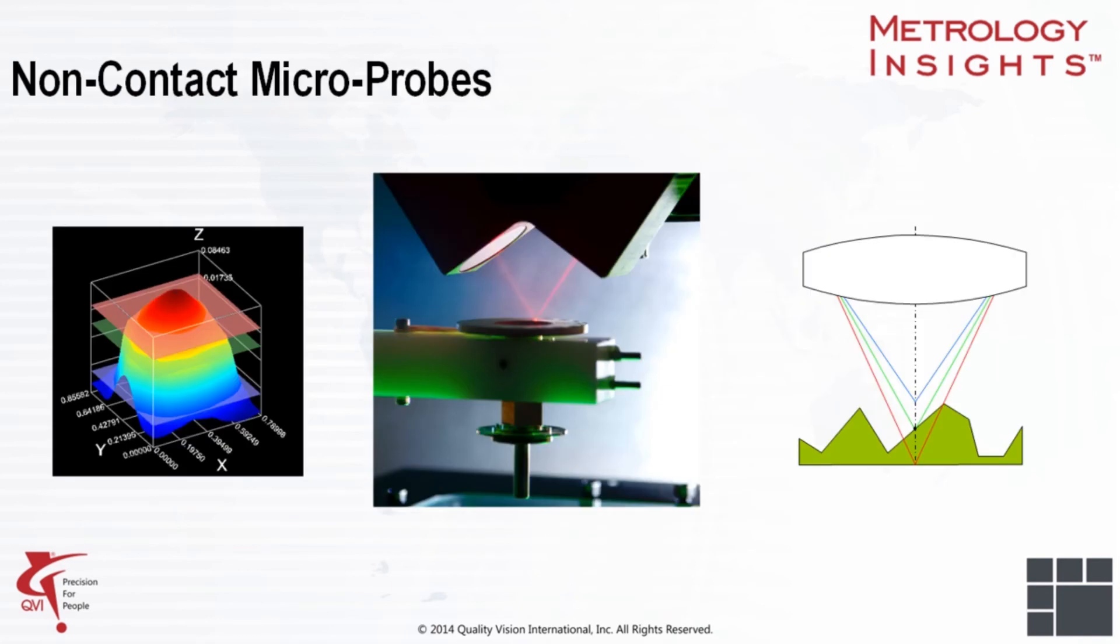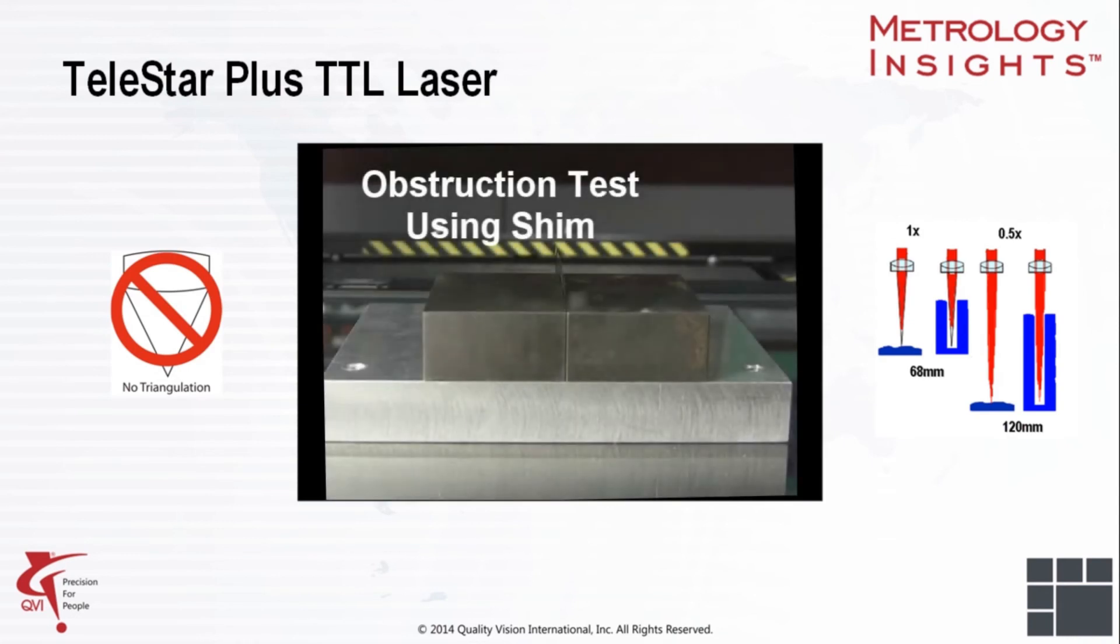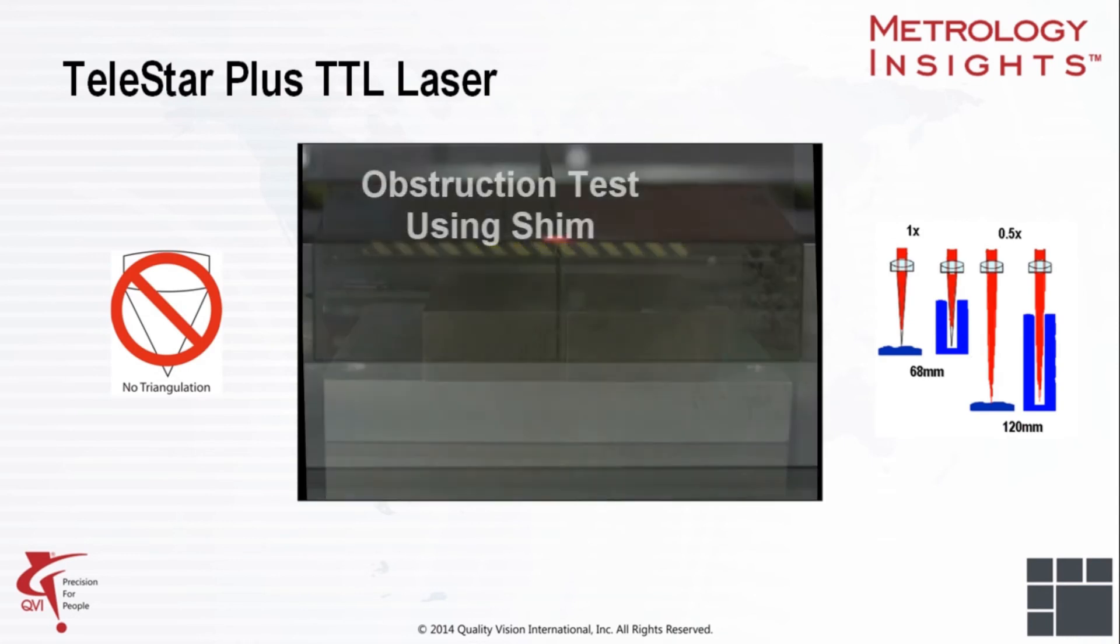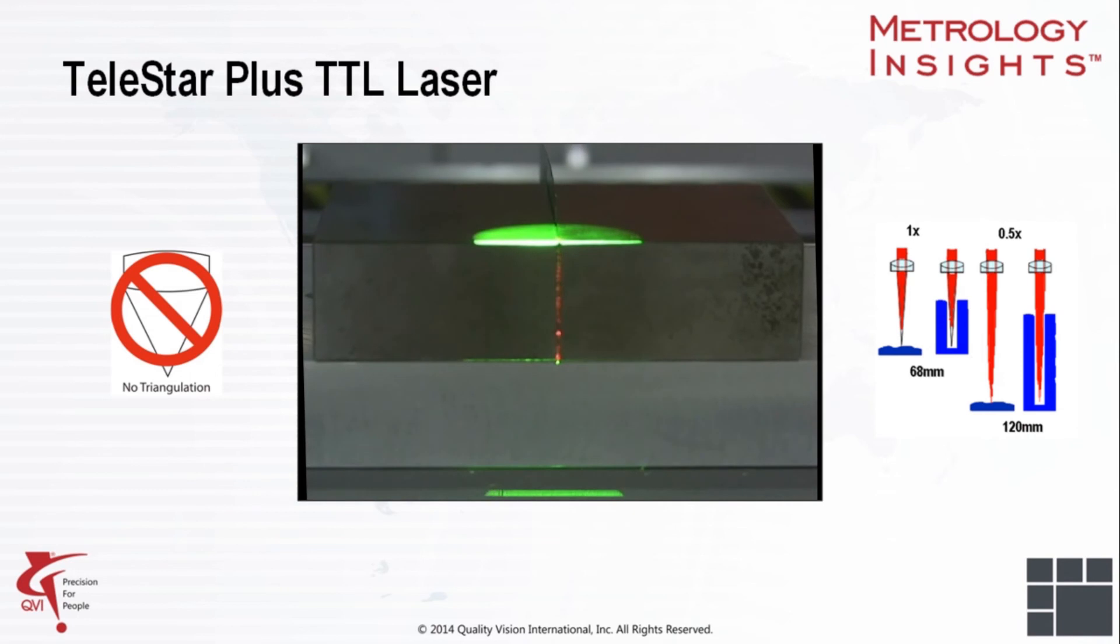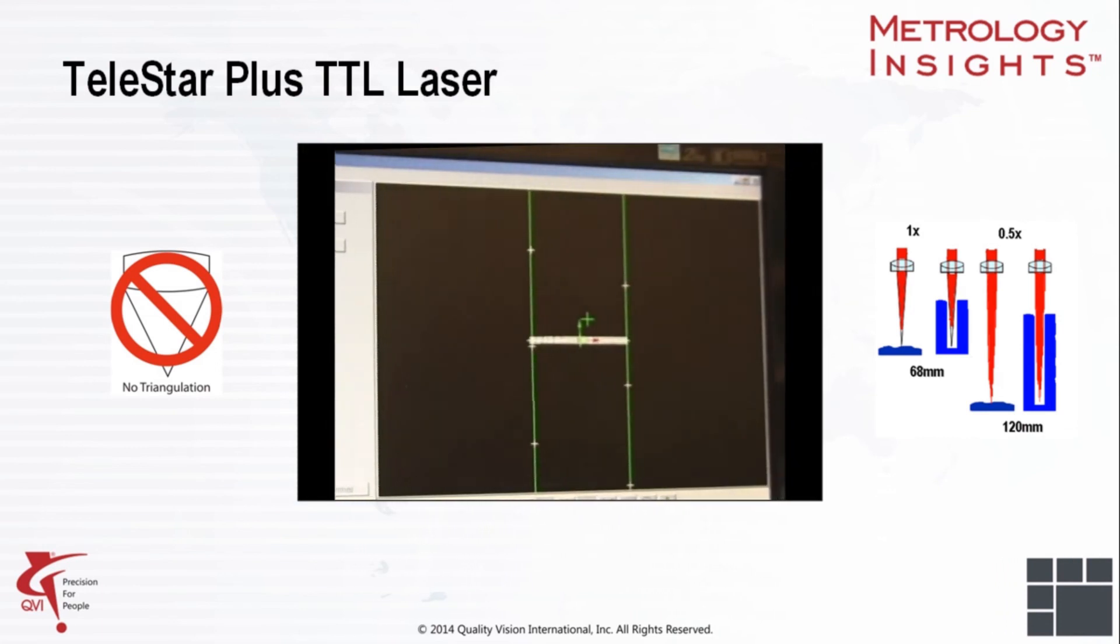Non-contact probes use a variety of optics and light sources to form images or create profiles of microparts. The Telestar Plus TTL laser uses a unique interferometric sensing technology that yields a high measurement resolution. The interferometer includes a built-in reference enabling high accuracy even in difficult measurement conditions such as diffuse light scattering surfaces, contours and machined metal parts.